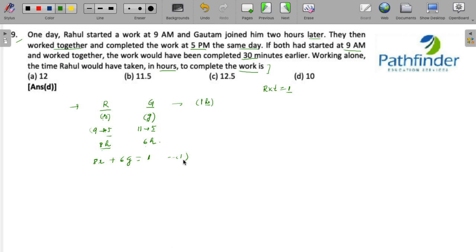The next thing that is given to you is if both had started work at 9 a.m. and work together, the work would have been completed 30 minutes earlier. Now this is another condition given to you.